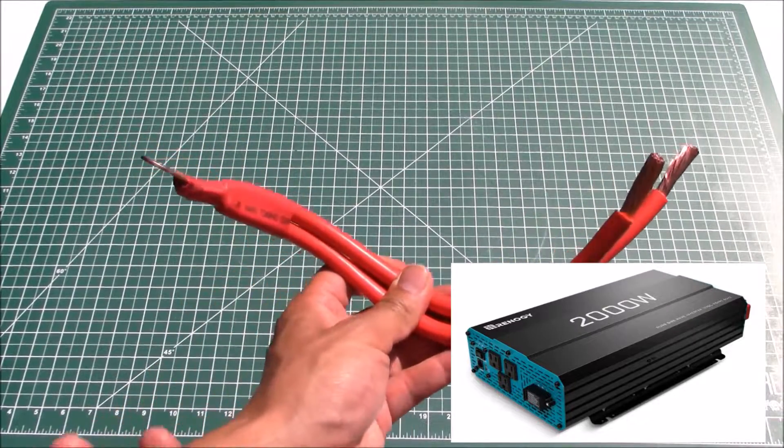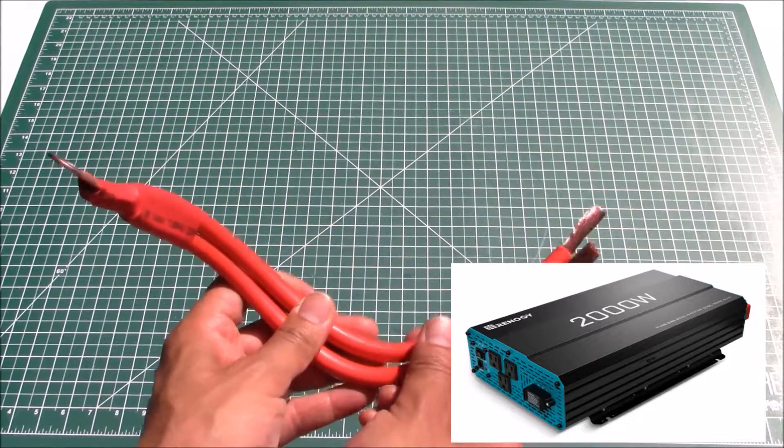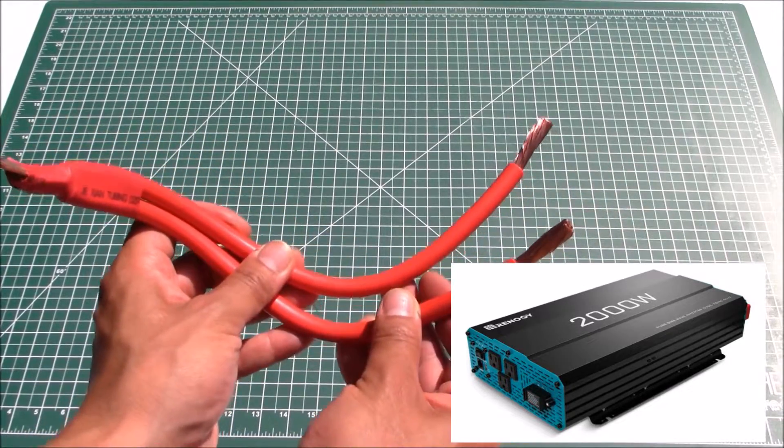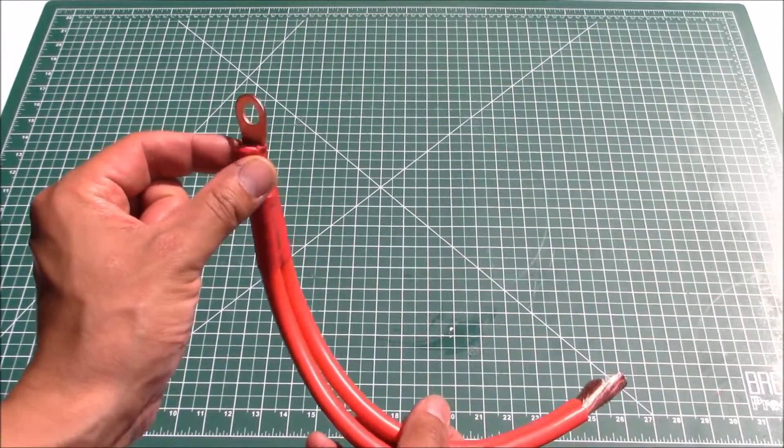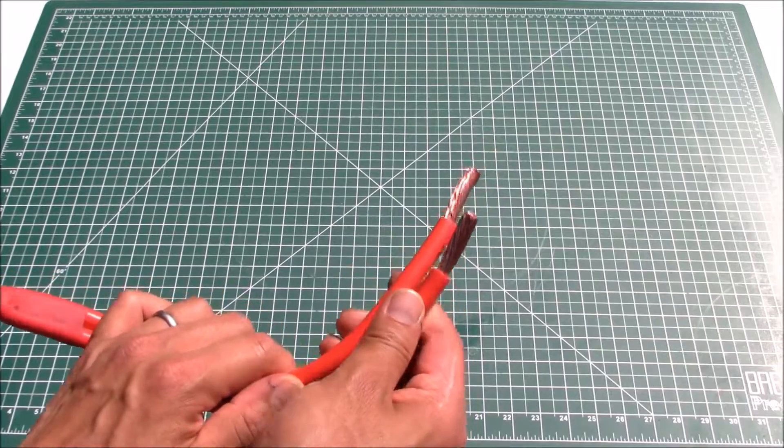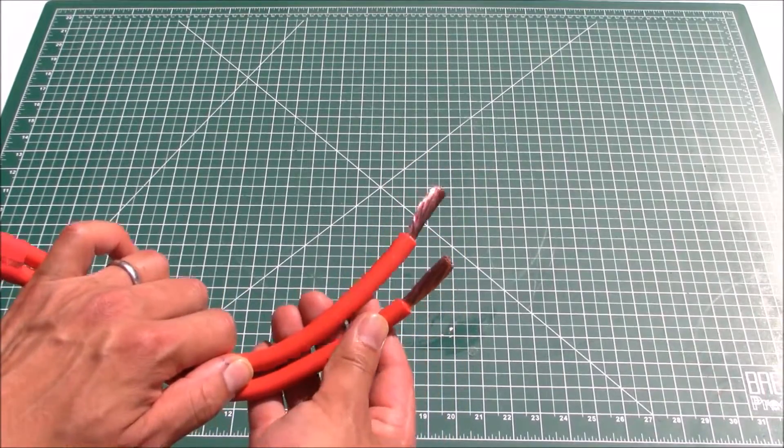I don't know why the company did it like this. I guess they're probably trying to save money, but what they've done is they've taken two wires. These are four gauge wires and they've joined them to a single terminal on one end but then left the other ends kind of bare like this so you can connect them to whatever you want.